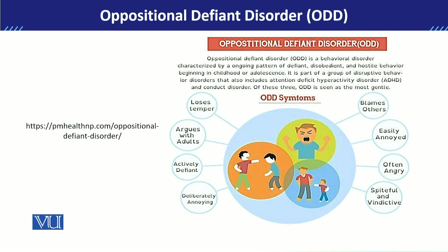जब हम defiant या disobedience की बात करते हैं, तो इसका मतलब है कि ऐसे बच्चे बहुत ज़्यादा argumentative होते हैं और वो अपना blame दूसरे लोगों पर shift करना शुरू कर देते हैं। इसके साथ साथ ये बहुत ज़्यादा annoying होते हैं — यानि बहुत easily दूसरे शख्स को irritate कर देते हैं।